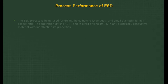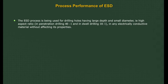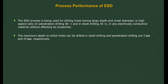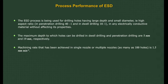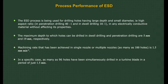Process performance of ESD: The ESD process is used for drilling holes with a high aspect ratio — 40:1 in penetration drilling and 10:1 in dwell drilling — in any electrically conductive material without affecting its properties. The maximum depth to which holes can be drilled in dwell drilling and penetration drilling are 5 mm and 19 mm respectively. The machining rate achieved using single or multiple nozzles (as many as 100 holes) is 1.5 mm per minute. In a specific case, as many as 96 holes have been simultaneously drilled in a turbine blade in just 1.5 minutes.